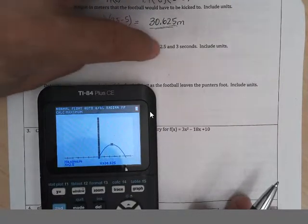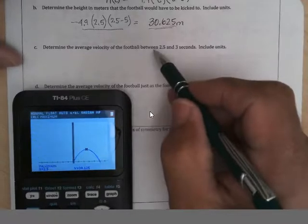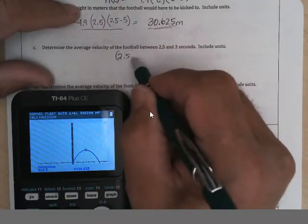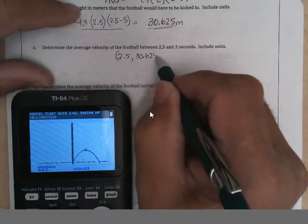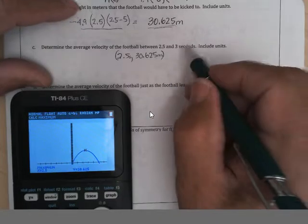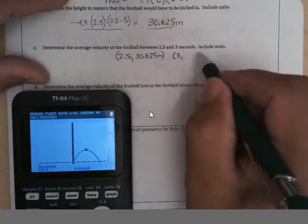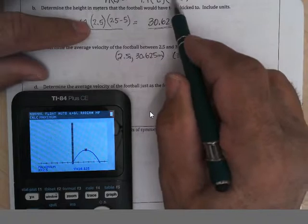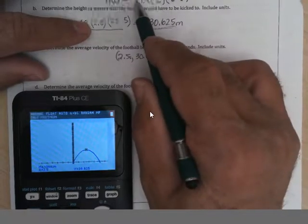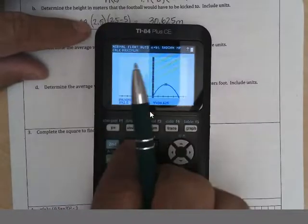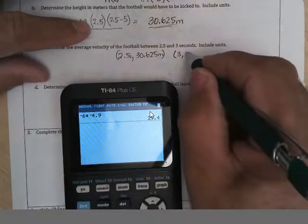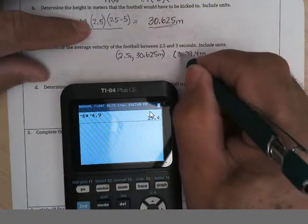Determine the average velocity between this time and this time. Well, if we put 2.5 in, then we get a height of 30.625 seconds and meters. How high is it at 3 seconds? So we put 3 in here. So it'd be 3 times negative 2. 3 minus 5 is negative 2. So 3 times negative 2 is 6. Negative 6 times negative 4.9. And I get 29.4 meters high at 3 seconds.